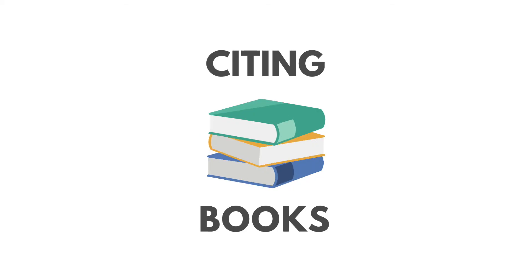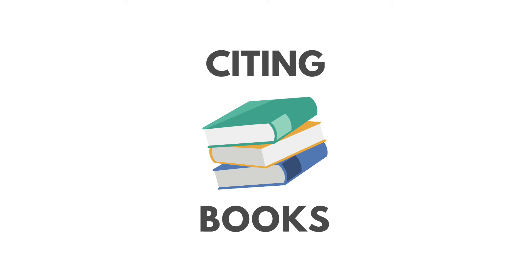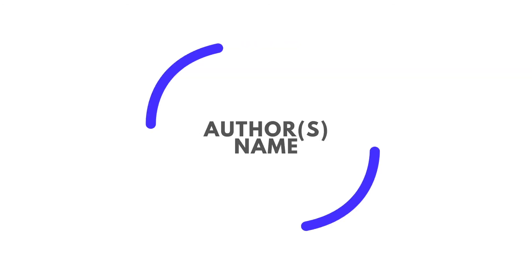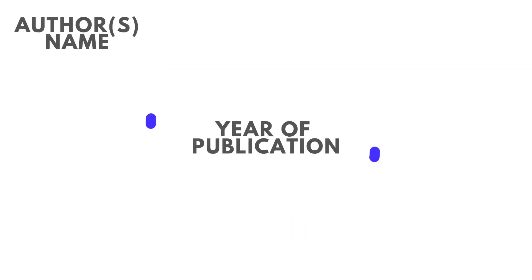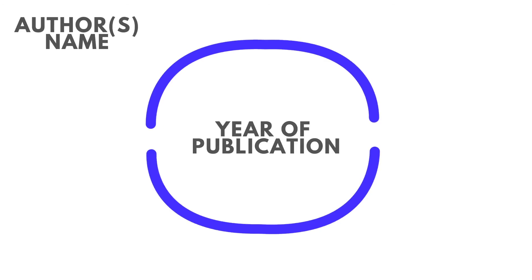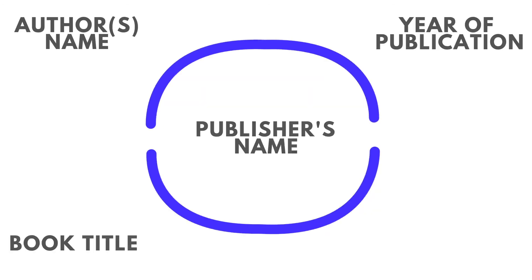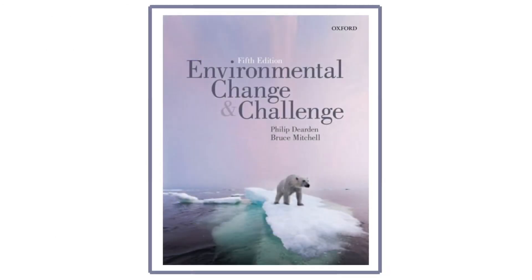Lastly, let's look at how we can cite books. For this example, we'll use two authors. For this citation, you'll need the names of the authors, year of publication, the title of the book, and the publisher's name. This information can be found on the front cover and on the copyright page, which is usually the first page in the book.